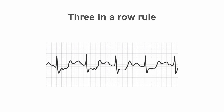Many people use the three-in-a-row rule to help sort this out. It's kind of an unofficial thing, but it seems to work well. If we have significant ST segment depression in three in a row — or more than three in a row — of our QRSTs, then we're willing to believe that it's real as opposed to artifactual. If it's not there consistently, defined as three in a row or more, then it probably is just artifact.